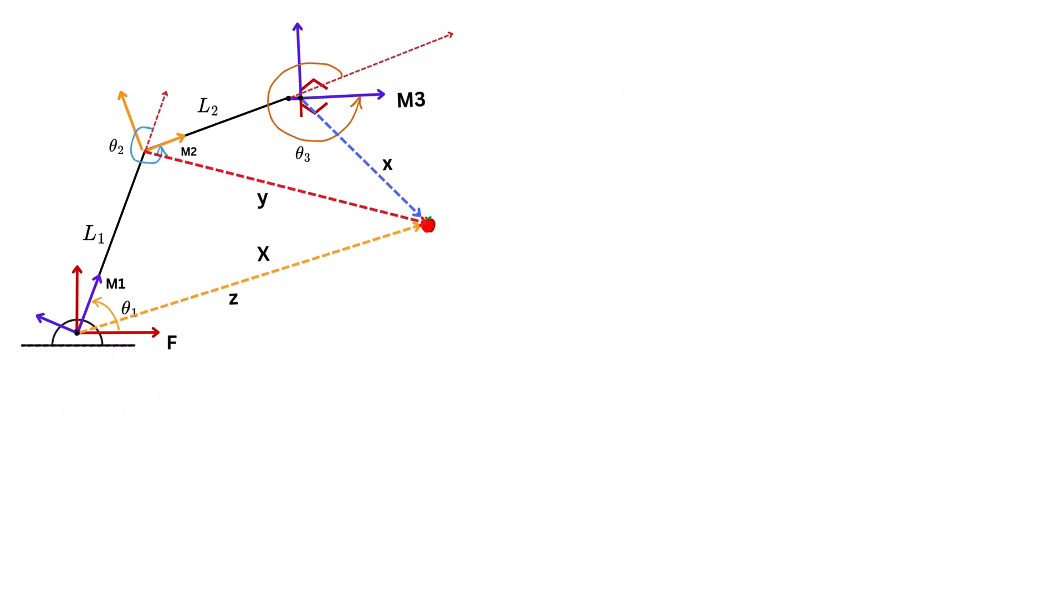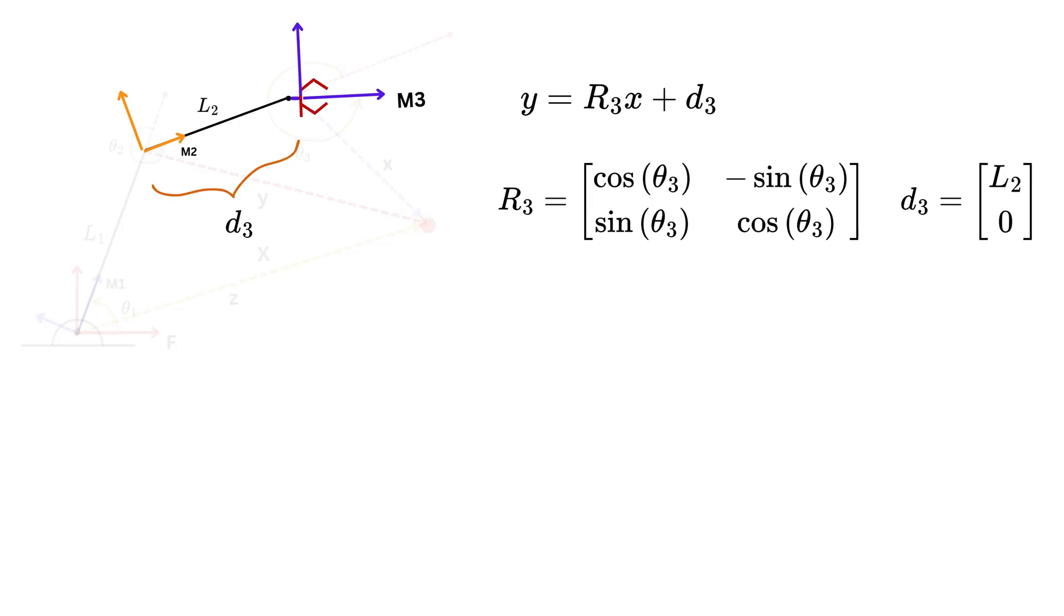Then, using coordinate transformation, I have already shown that y equals r3 small x plus d3, where r3 will be this rotation matrix and d3 will be L2 and zero because d3 represents how much the origin of frame M3 has translated relative to the origin of the previous frame M2.